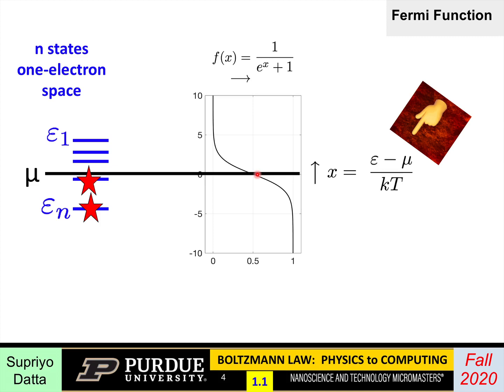What I really want to talk about this week, and in this course in general, is a much more general law: Boltzmann's law, which applies to all systems in equilibrium. It doesn't matter how complicated or simple the system is. For example, you may have heard of the Bose-Einstein distribution obeyed by photons — that too comes out of Boltzmann's law, although we won't be talking about it.